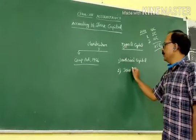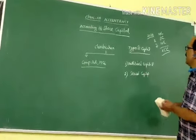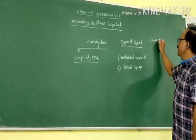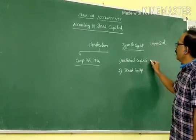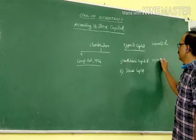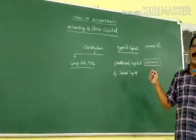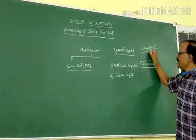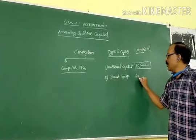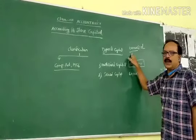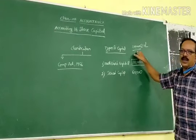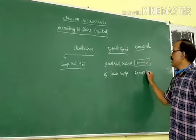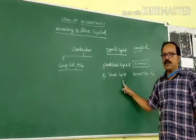The second type is issued capital. Suppose authorized capital is 1 lakh shares at a face value of 10 each — that means authorized capital is 10 lakhs. Out of these 1 lakh shares, suppose I am issuing only 60,000 shares to the public right now. There is no rule that I have to issue all shares at once. So 60,000 shares at 10 each equals 6 lakhs — that is the issued capital.